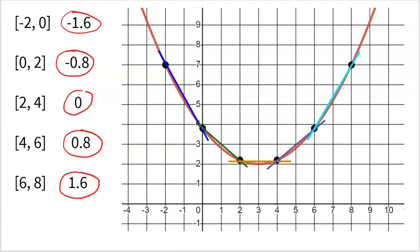What do you notice about these rates of change? First, they are increasing: it starts at negative 1.6, increases to negative 0.8, then to 0, then 0.8, then 1.6. You can actually see it in the lines — first very negative, then less negative, then flat at 0, then more and more positive. That means we are concave up. Concave up is when your rates of change increase over the interval.